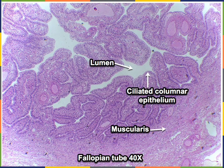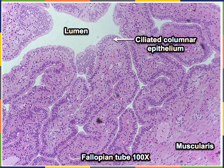Here we see the histology of a fallopian tube, also known as a uterine tube, which has a ciliated columnar epithelium lining the inner mucous membrane, surrounded by a muscularis of smooth muscle. The cilia beat back and forth to help move a secondary oocyte, zygote, or sperm cell through the uterine tube, while the smooth muscle in the muscularis performs involuntary waves of contraction to also facilitate transport.